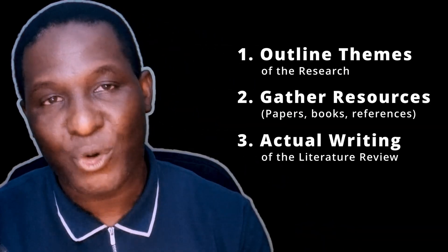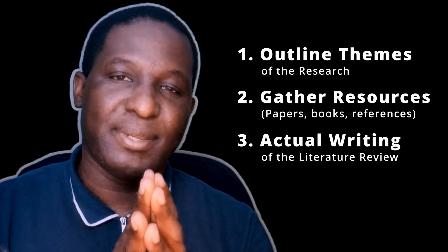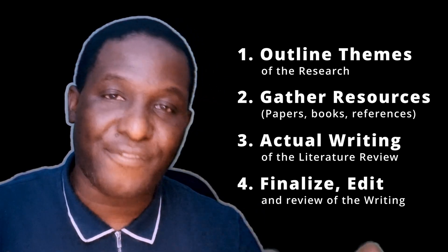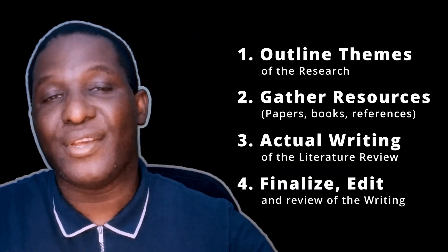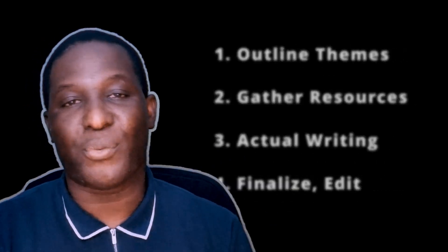The first is outlining the themes driving his research — identifying themes relevant to his research. The second is gathering all the resources needed for the literature review: journal articles, books, publications, patents, personal communications, and ChatGPT output. The third is the actual writing of the literature review — you're not outsourcing that writing. The fourth is to finalize, edit and review to make sure you have a final structure.